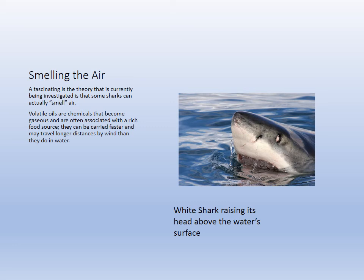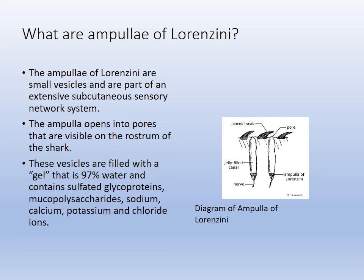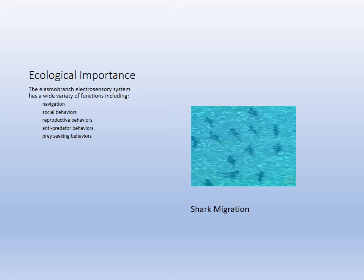It's only a theory since sharks don't talk, but they tend to move up around carcasses to detect volatile oils — volatile meaning they evaporate. The ampullae are fluid-filled with nerves detecting the concentration gradient of ions and electrical charges. The ecological importance of this unique system includes navigation, social behaviors, reproduction, anti-predator responses, and seeking prey.